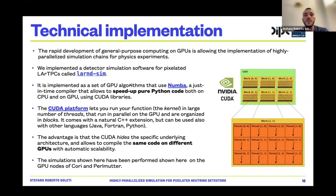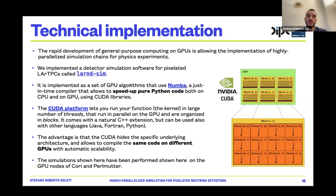The CUDA platform has a natural C++ extension but can also be used with other languages — Java, Fortran if you want to hurt yourself, and Python, which was our choice. The advantage of CUDA is that it hides the specific underlying architecture, so you write your code once and it runs on different GPUs with automatic scalability. The simulations shown were performed on the GPU nodes of Cori and then Perlmutter.